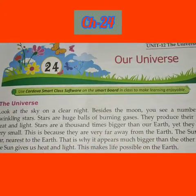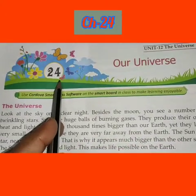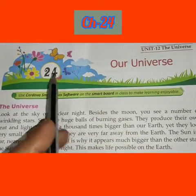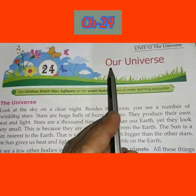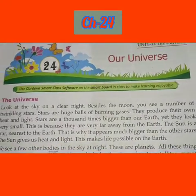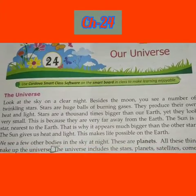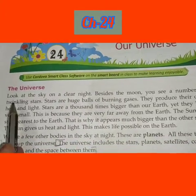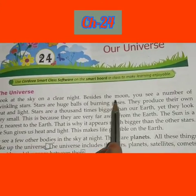Good morning students, welcome to chapter number 24. The chapter name is 'Our Universe.' This is a very interesting chapter, so let's start. The universe — look at the sky on a clear night. Besides the moon, you see a number of twinkling stars.